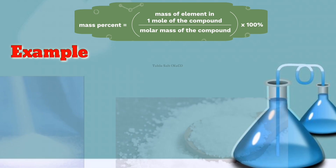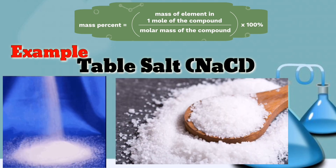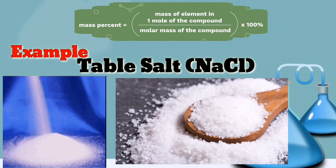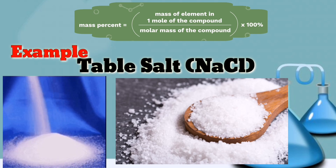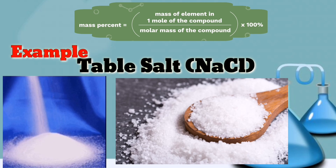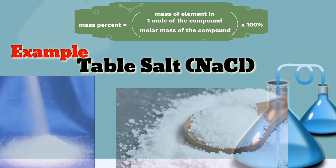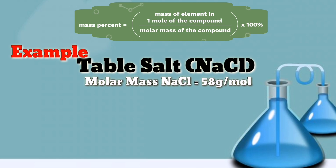Let's try again. Here we have table salt, NaCl. We're going to identify the percentage of sodium and chlorine in the compound. First, let's identify the molar mass of NaCl, and that is 58 grams per mole.